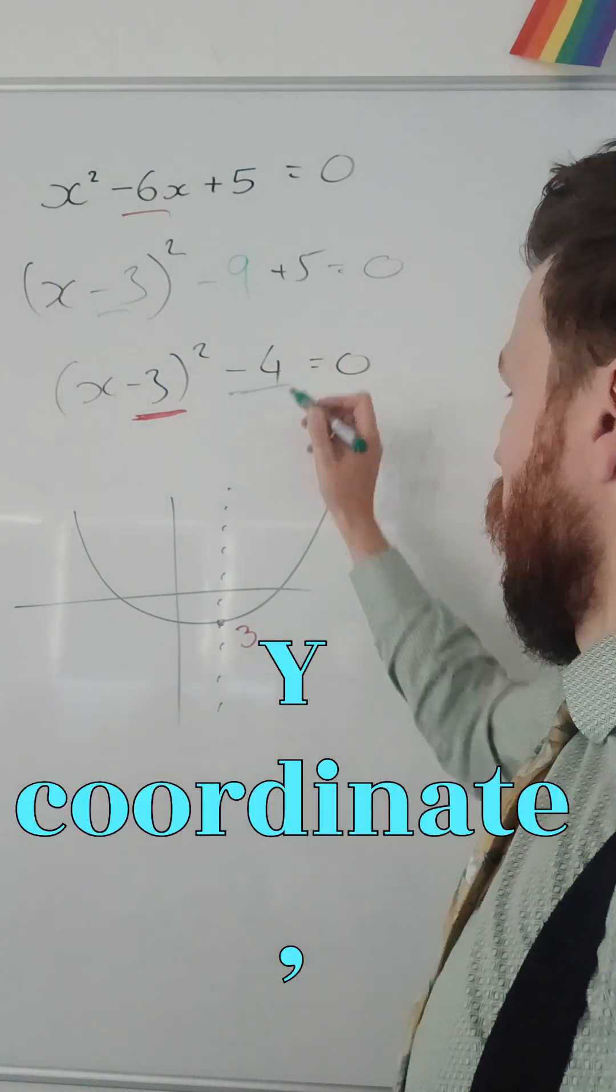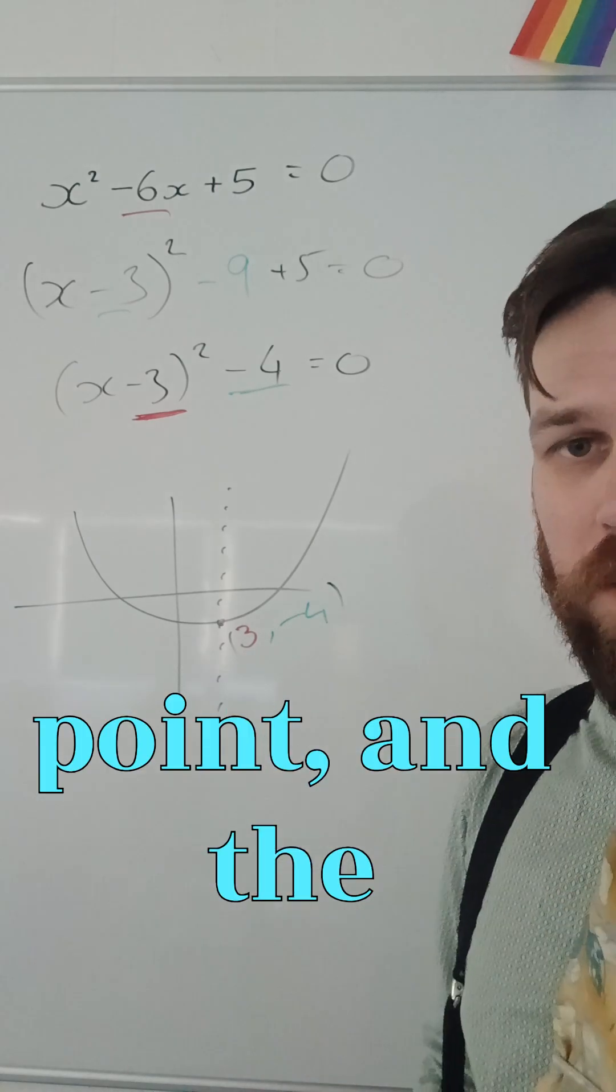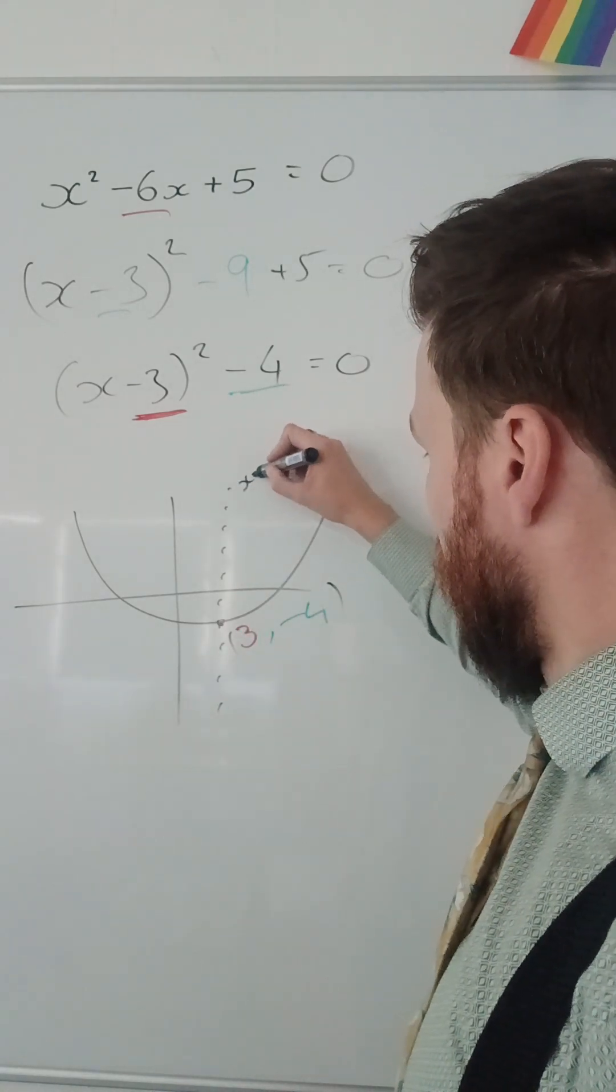And this bit is my y-coordinate, which is negative 4. So, those are the coordinates of the turning point, and the line of reflection here is x equals 3.